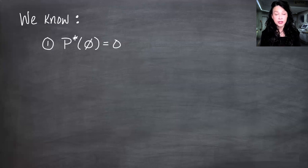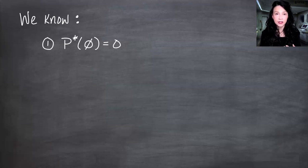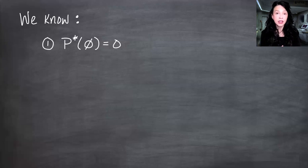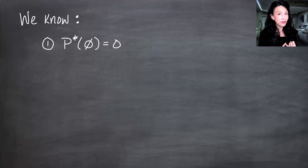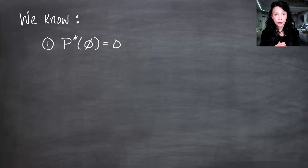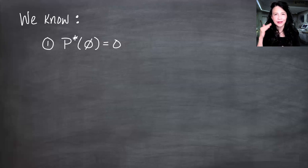We showed that P-star of the empty set is zero, and that's a great thing because that's one of the three properties we need for P-star to be a probability measure. The other properties are countable additivity — meaning that for a countable union of disjoint sets the probability measure of that union equals the sum of the individual measures — and that P-star is between zero and one with P-star of the entire omega equal to one. We know that P-star of the empty set is zero, so we're on our way.